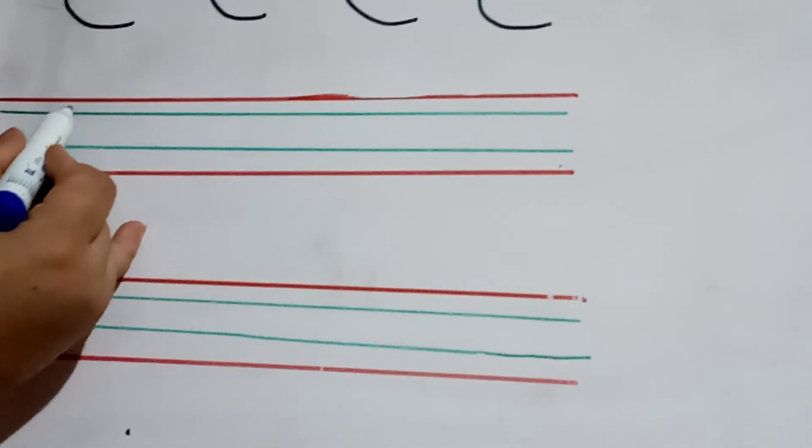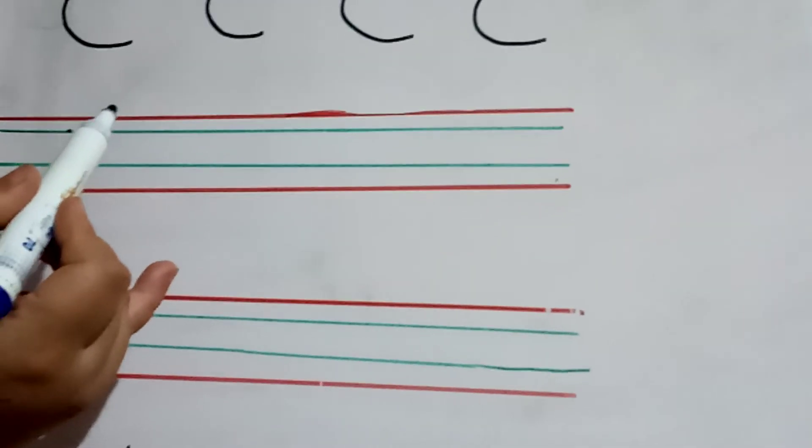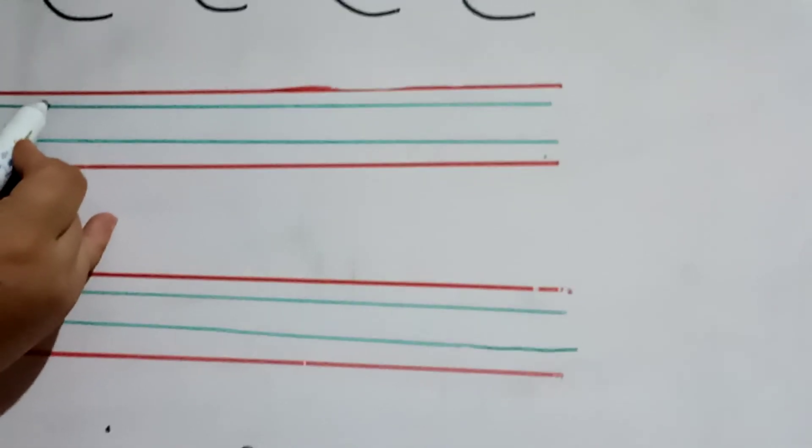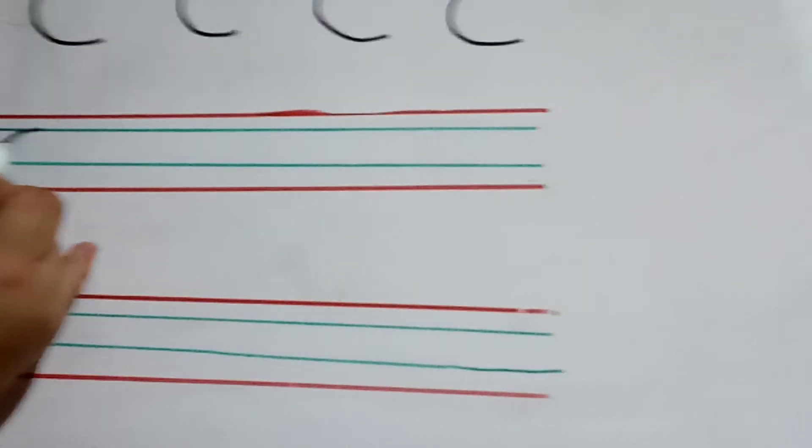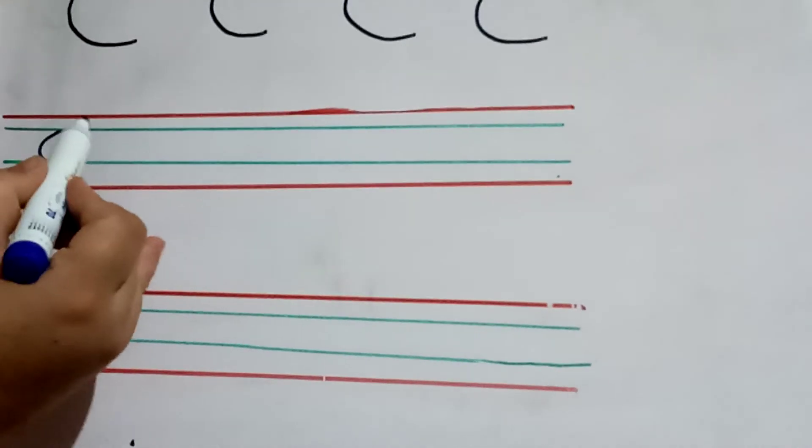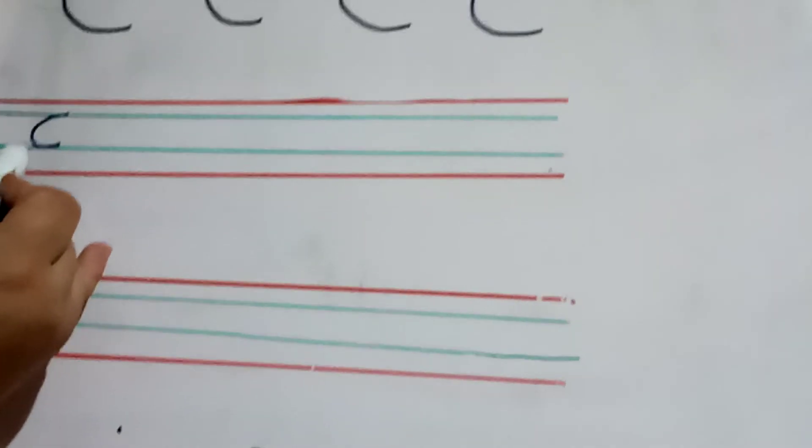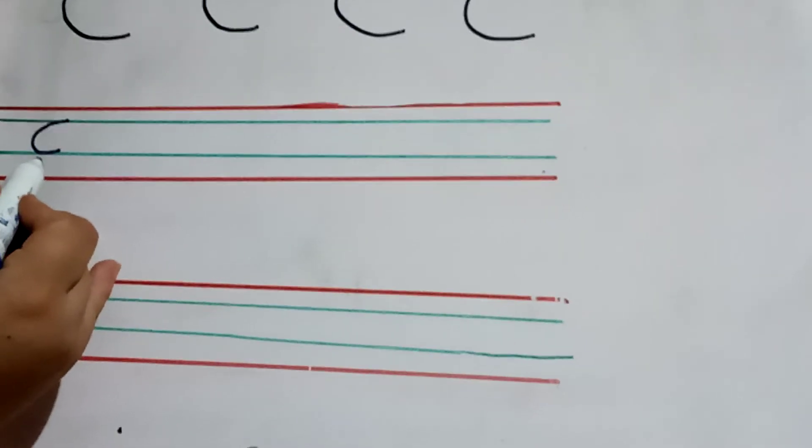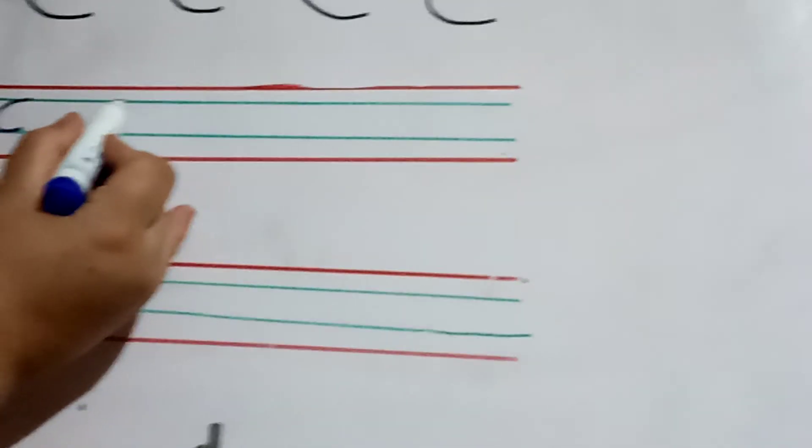Start from second middle line. Start from here. Make a curve. Come down and stop. It's your C. It's your C. C-C. C-C. C-Cat. C-Cake.